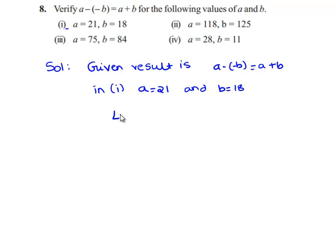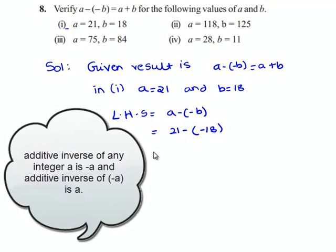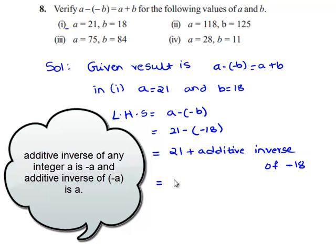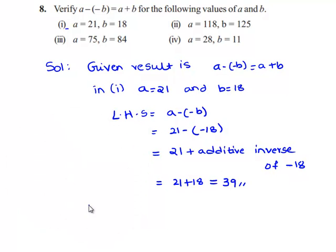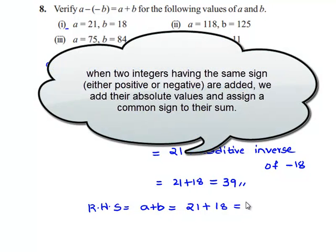LHS is equals to a minus of minus b. That will be 21 minus of minus 18. This is 21 plus, as the inverse of minus 18 is positive 18. That will be 21 plus 18, which is equal to 39. If we see the RHS, RHS is a plus b. We'll substitute the values: a is 21 plus b is 18, that is equal to 39.